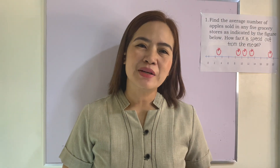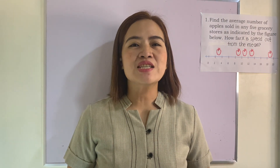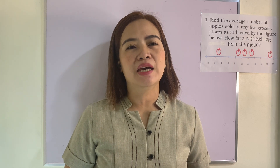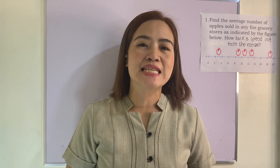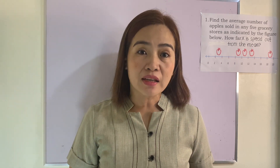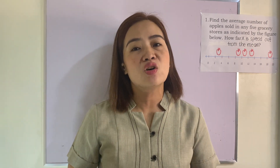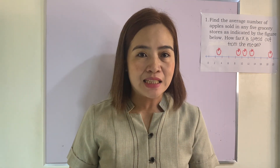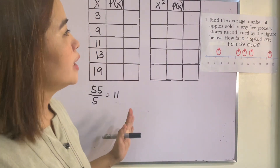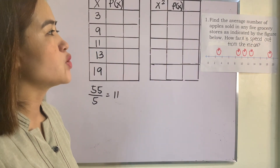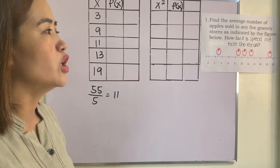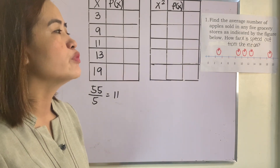Hello everyone, welcome back to my channel. Our most essential learning competency for today is to illustrate the mean and variance of a discrete random variable. We know what a mean is — we just get the average, add all the values and divide by the number of values. Now, what about getting the mean and variance of a discrete random variable? Find the average number of apples sold in any five grocery stores as indicated by the figure below, and how far x is spread out from the mean.